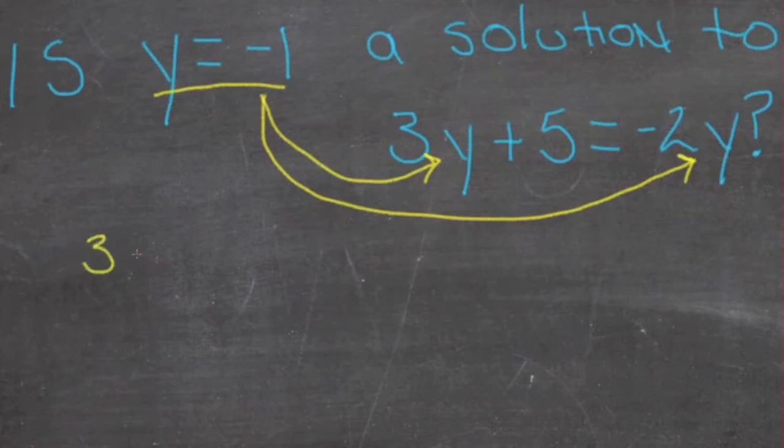So if we come out with 3 times negative 1, plus 5 is equal to negative 2 times negative 1.